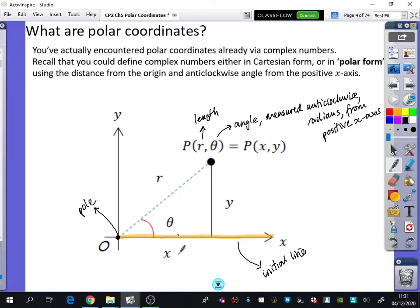So x running along the bottom is just going to be r cos θ because it's adjacent. y is opposite the θ, so it's going to be r sin θ. And you can clearly see from the Pythagoras here that r² equals x² + y².